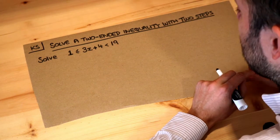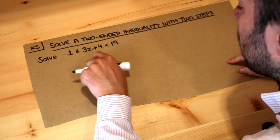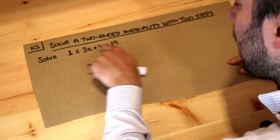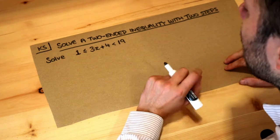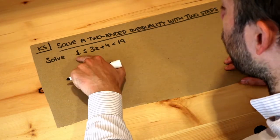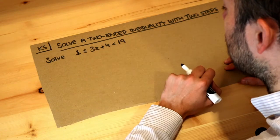Now in the previous video we explored what it meant to have a two-ended inequality where we have a left end, a middle bit and a right end where we have two inequality symbols and the key point is that whatever we do to one part of this we have to do the same to the other two.